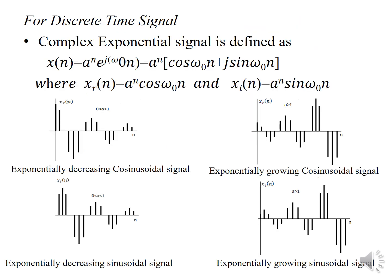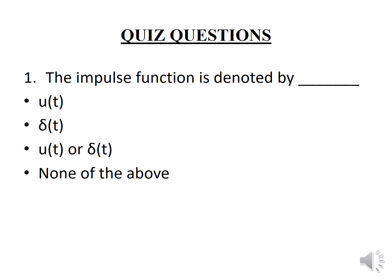For discrete time, the complex exponential signal is defined as x(n) = A·r^n · e^(jω₀n), where r^n is split into real and imaginary terms. Depending upon the value of r, this gives an exponentially decreasing or growing cosinusoidal signal. When 0 < r < 1, we get a decreasing cosinusoidal signal, and when r > 1, we get a growing cosinusoidal signal. Thank you.